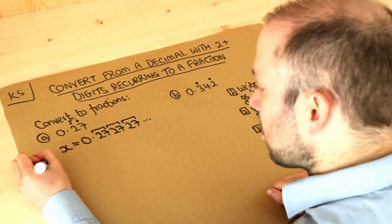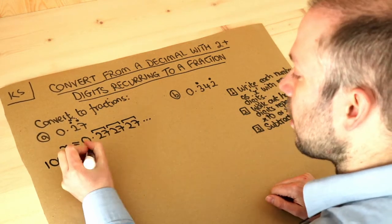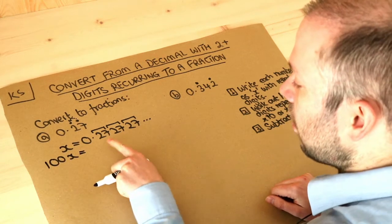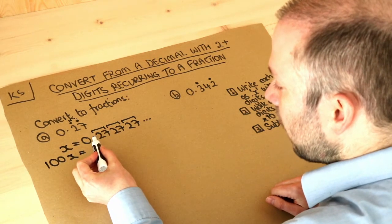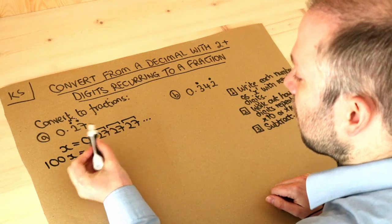So we times by a hundred, notice that there's two zeros there and it recurs every two digits. So if we times this by a hundred, we move the decimal point two places to the right so it becomes 27.272727, etc.